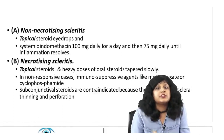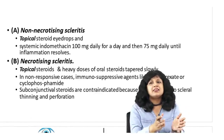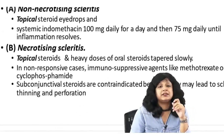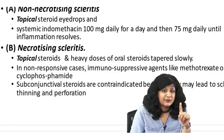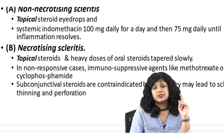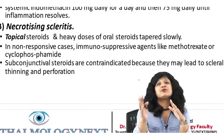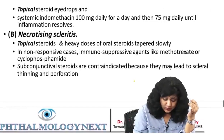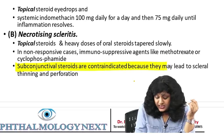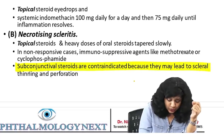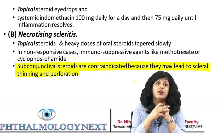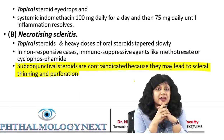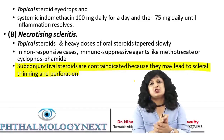For treatment: for non-necrotizing we can give steroid eye drops, and if systemic treatment is required, give indomethacin. For necrotizing, topical steroids will not be sufficient — you have to give heavy doses of oral steroids also. If they are not responding, one may have to give methotrexate and cyclophosphamide — immunosuppressive agents. Very importantly: subconjunctival steroids are strictly contraindicated because they may lead to scleral thinning and perforation. Give the steroids systemically, but do not give subconjunctival steroids as scleral thinning and perforation can take place.